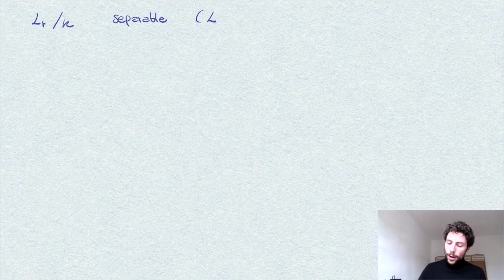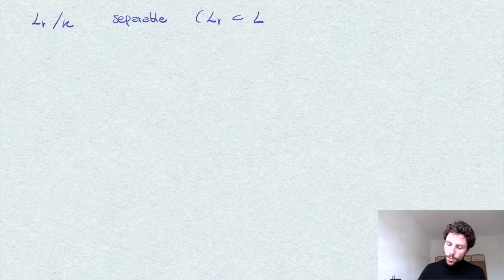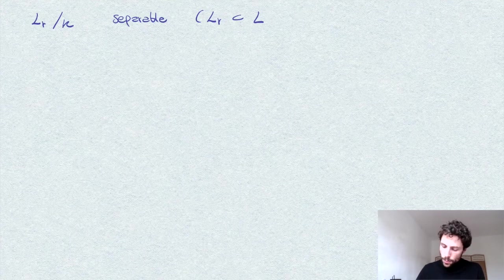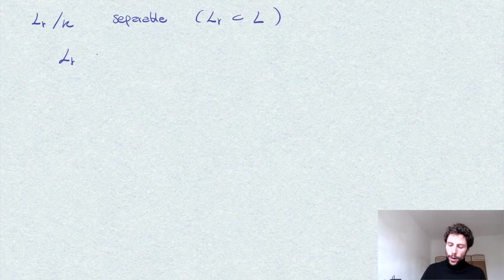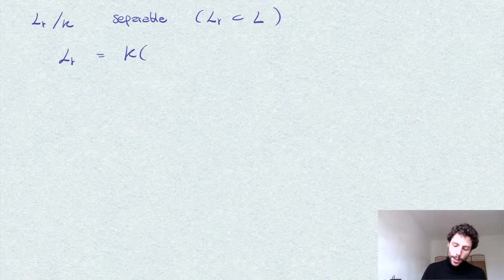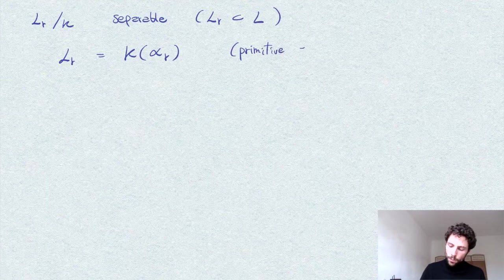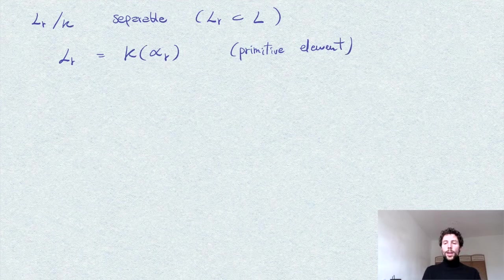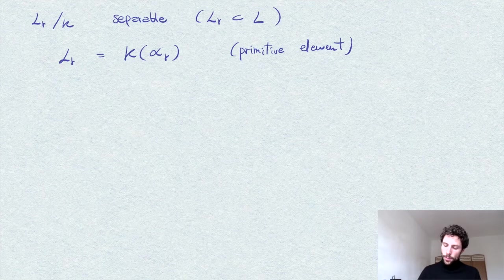Now what we have is that LR over K, as an extension of K, is separable clearly because LR is a sub-extension of L over K which is Galois and therefore separable. So in particular we can apply, for example, the primitive element theorem and write LR as K extended by one element alpha_R by the primitive element.